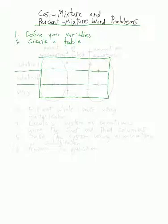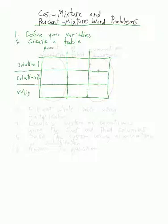Here's our table. We have solution one, solution two, and the mix. The different columns are: the amount of solution, the percent substance — whatever the substance happens to be — and then the amount of substance.